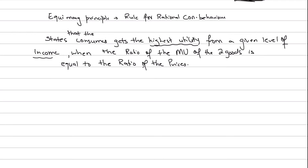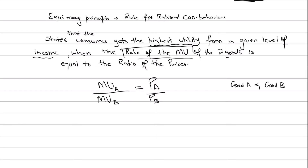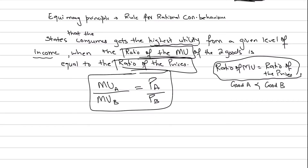The ratio of the marginal utility of the two goods — let's say good A and good B, which could be ice cream or chocolates — means that marginal utility of A divided by marginal utility of B is exactly equal to the price of A divided by the price of B. So the ratio of marginal utilities equals the ratio of prices, and when this happens, this is the equi-marginal principle and this is the optimum bundle.